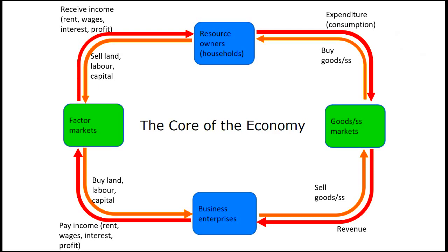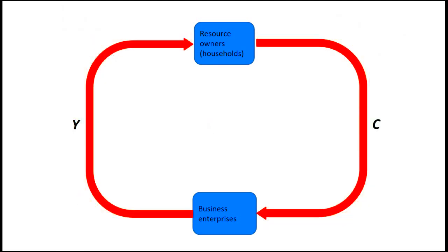Meanwhile, the businesses use those resources to produce goods and services, which they then sell to the households, and in exchange the households spend their income in consumption — that is, in the purchase of the goods and services produced by the firms. This is the essence of the core of the economy. We've removed the physical flows just to look at the expenditure and income flows.